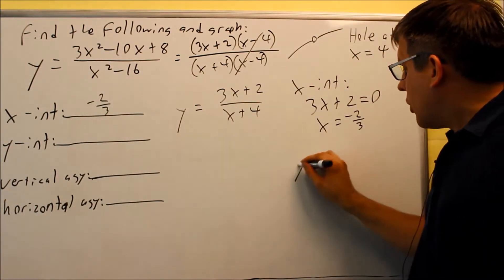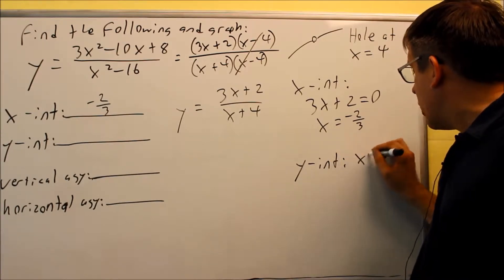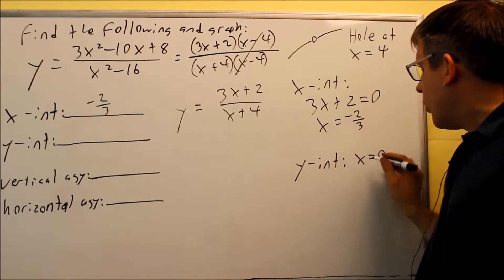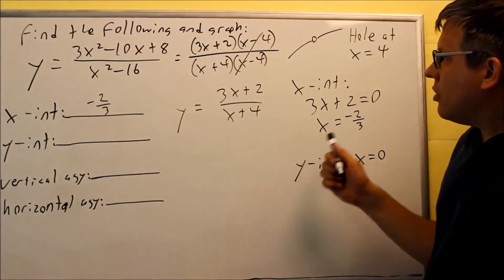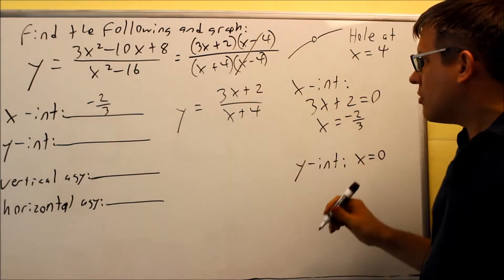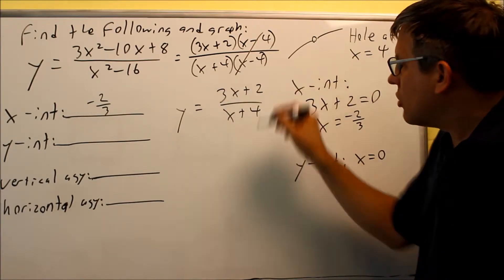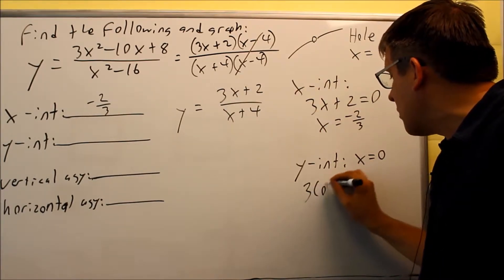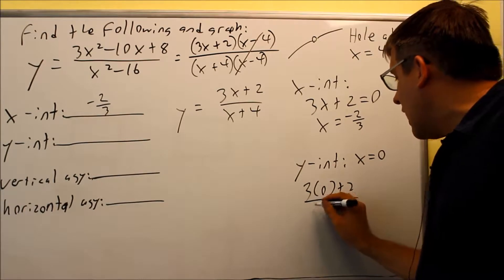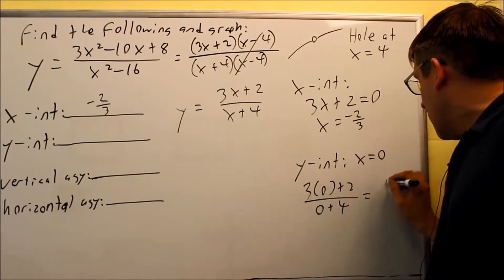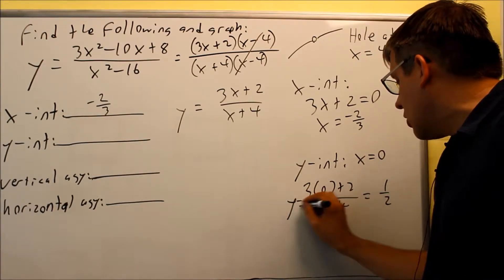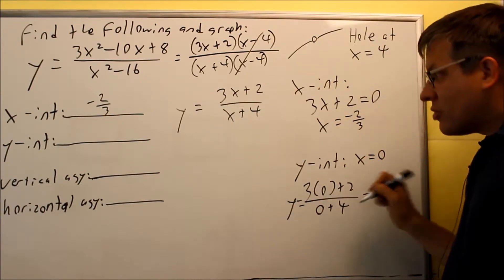Next we want to find the y-intercept, which is where you put in a zero for the x. So I can use the original one or this one, it doesn't matter. Actually no, I want to use this one, so again always use the original one for that. I'm putting three times zero plus two and I have zero plus four, that gives us one half. So we use the reduced version, it's easier to put in. We get one half for the y-intercept.